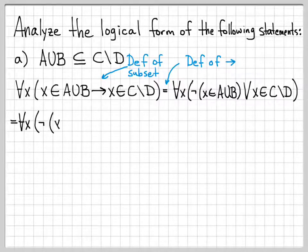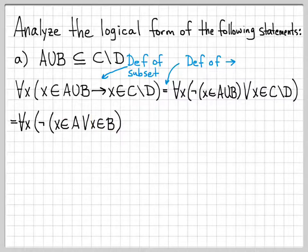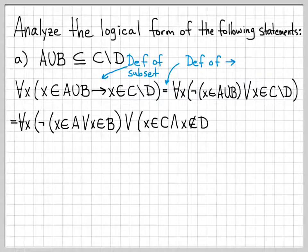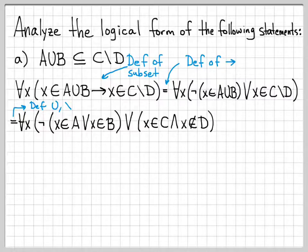This is equal to: for all x, not (x in A or x in B), or (x in C and x not in D). The definition of x being in the union of A and B is that x is in A or x is in B — so I'm using the definition of union for the first part. Then for the second part, using the definition of set difference: x in C difference D means x is in C and x is not in D.